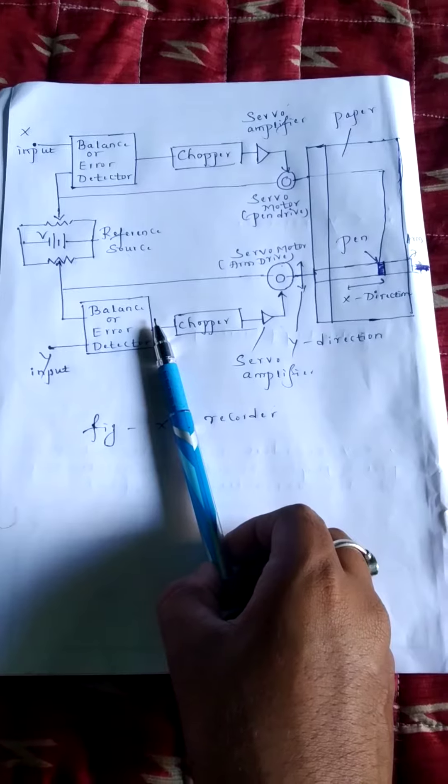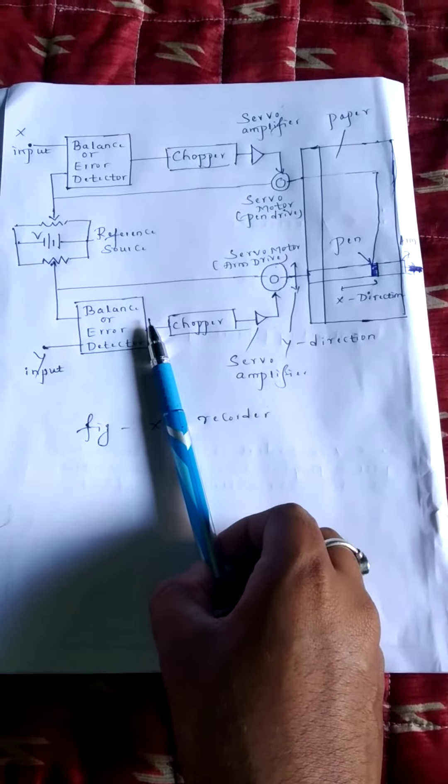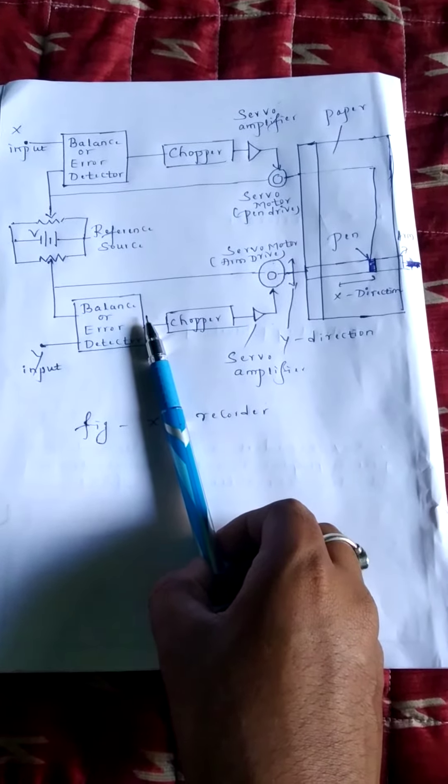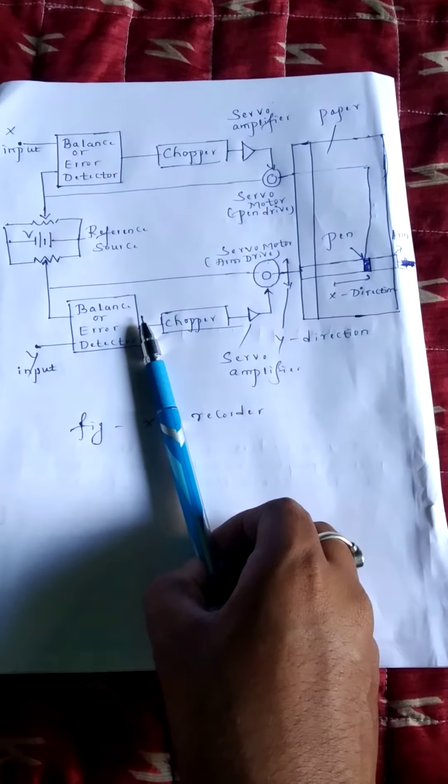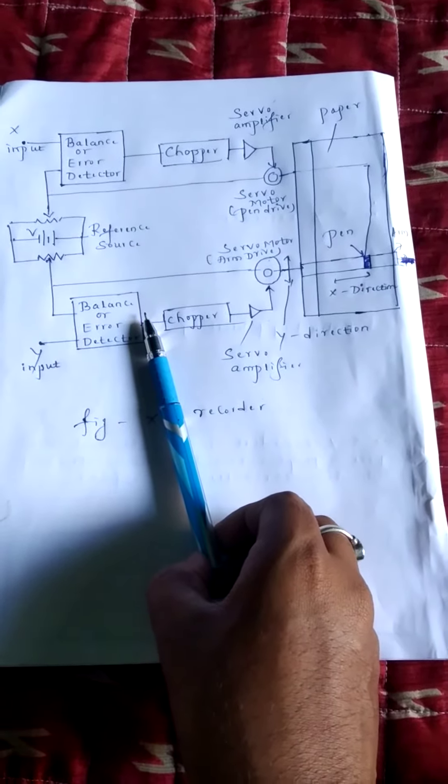The first, the statement of XY recorders: they are used where it is required to plot the instantaneous relationship between two variables, that is y is equal to f of x.